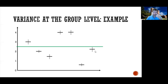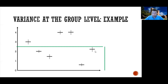Now we need to do inference. Is 2.5 a meaningful difference? Is it meaningfully different from zero, or is it not? Is it statistically different from zero? To know, we have to compare our effect to the variability. And as I said, there are multiple types of variability we could be using as the denominator in our t-test.